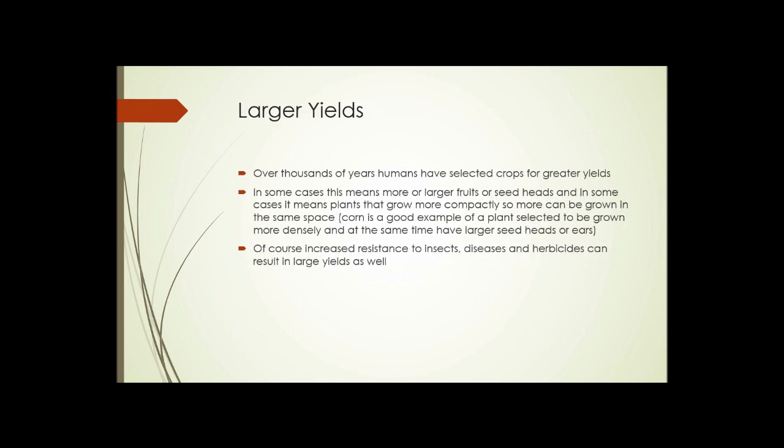Larger yields: over thousands of years, humans have selected crops for greater yields — that's one of the things that has driven agriculture. In some cases this means more or larger fruits or seed heads, and in some cases it means plants that grow more compactly so more can be grown in the same space. Corn or maize is a good example of a plant selected to be grown more densely while also having larger seed heads or ears. Increased resistance to insects, diseases, and herbicides can result in larger yields as well.